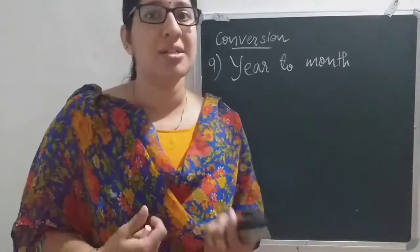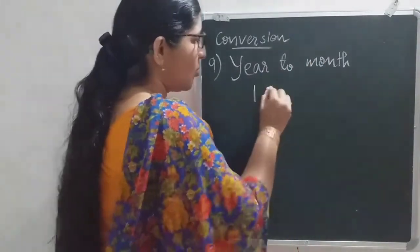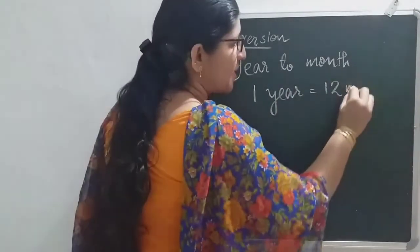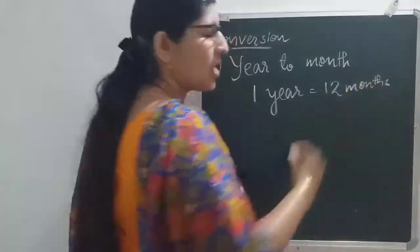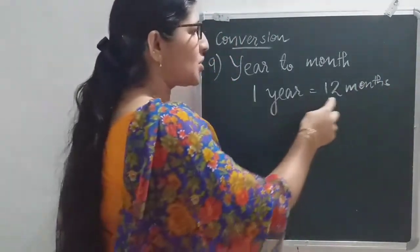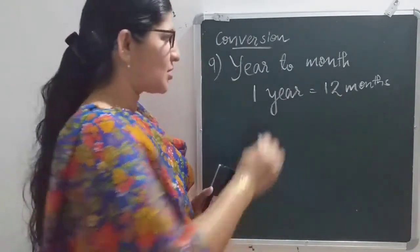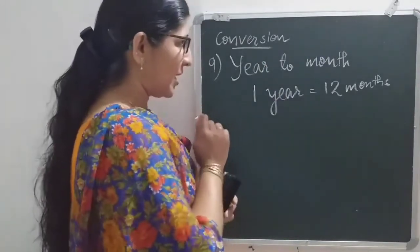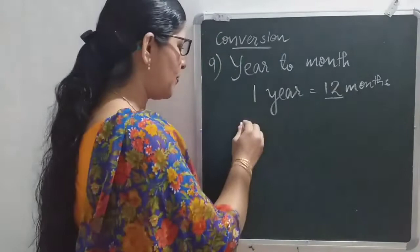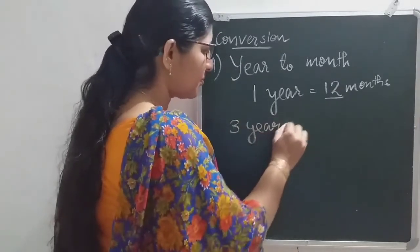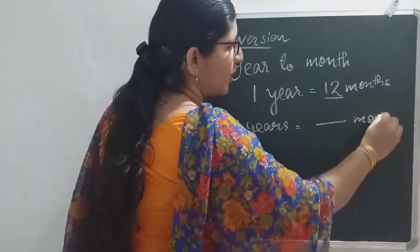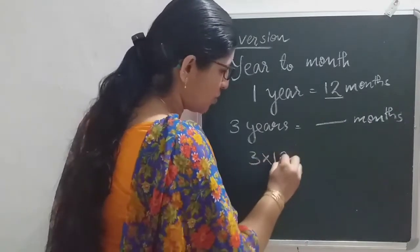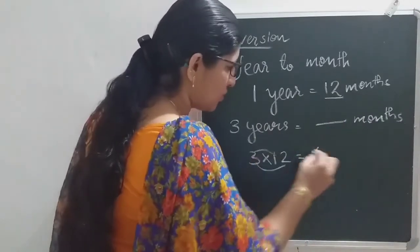Year to month — it is very easy if you know the method. One year has 12 months: January, February, and so on up to December. So one year equals 12 months. Year is bigger, month is small, so we need to multiply by 12. If it is three years, how many months? One year is equal to 12 months, so three years means 3 into 12, that is 36 months.